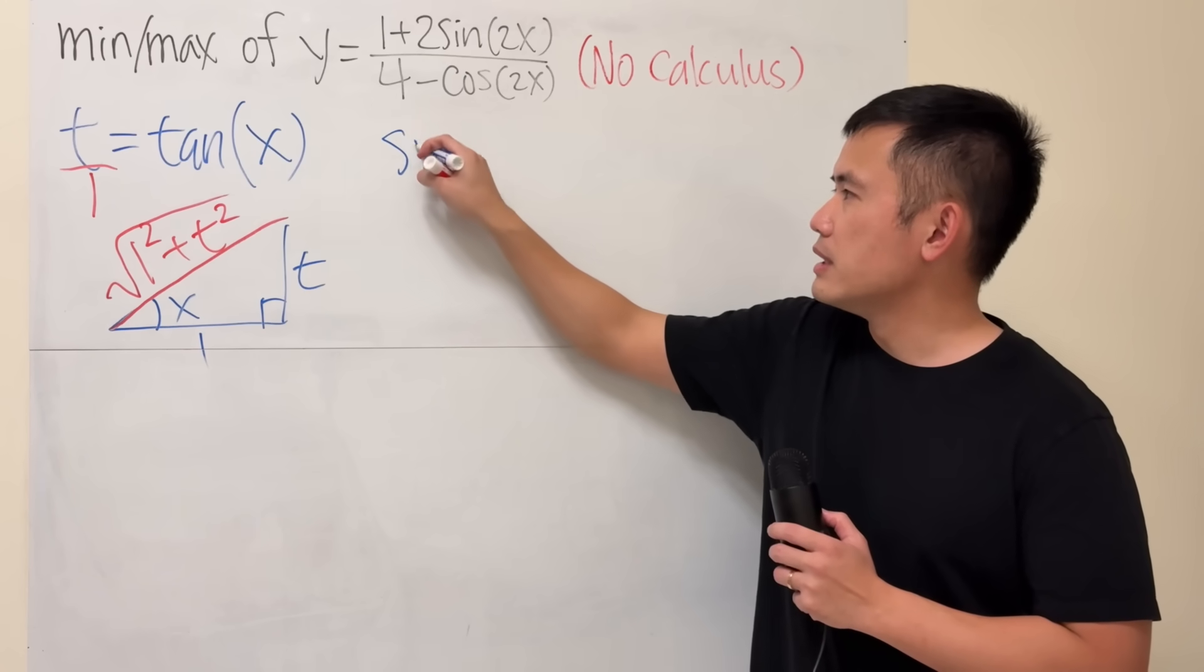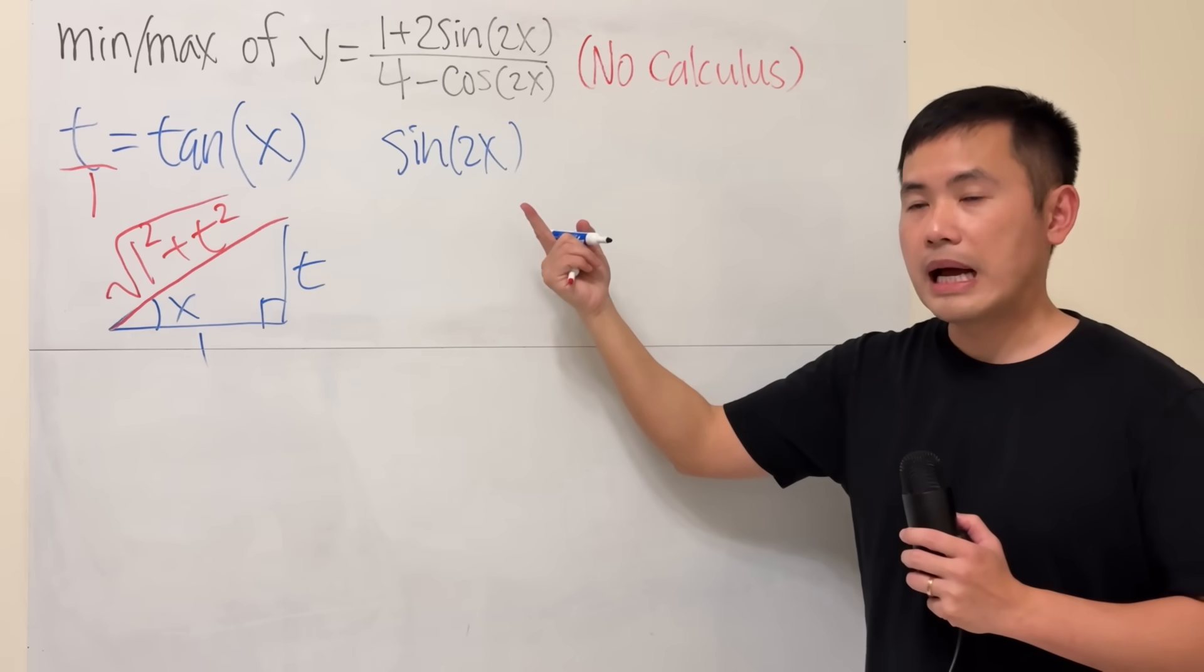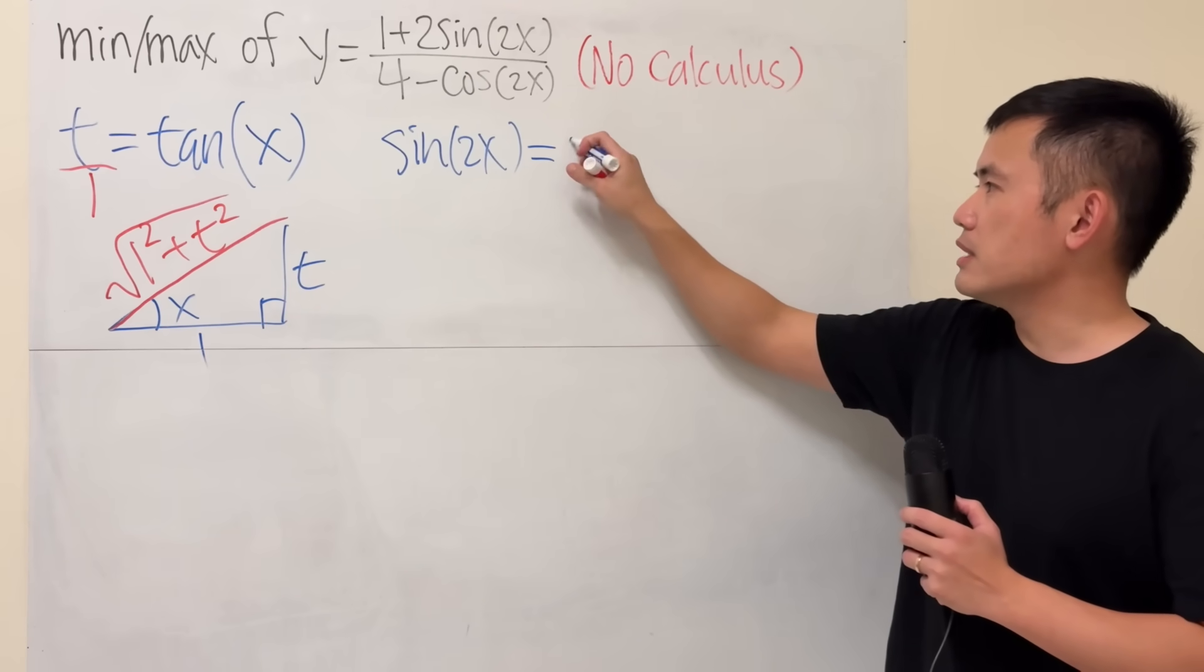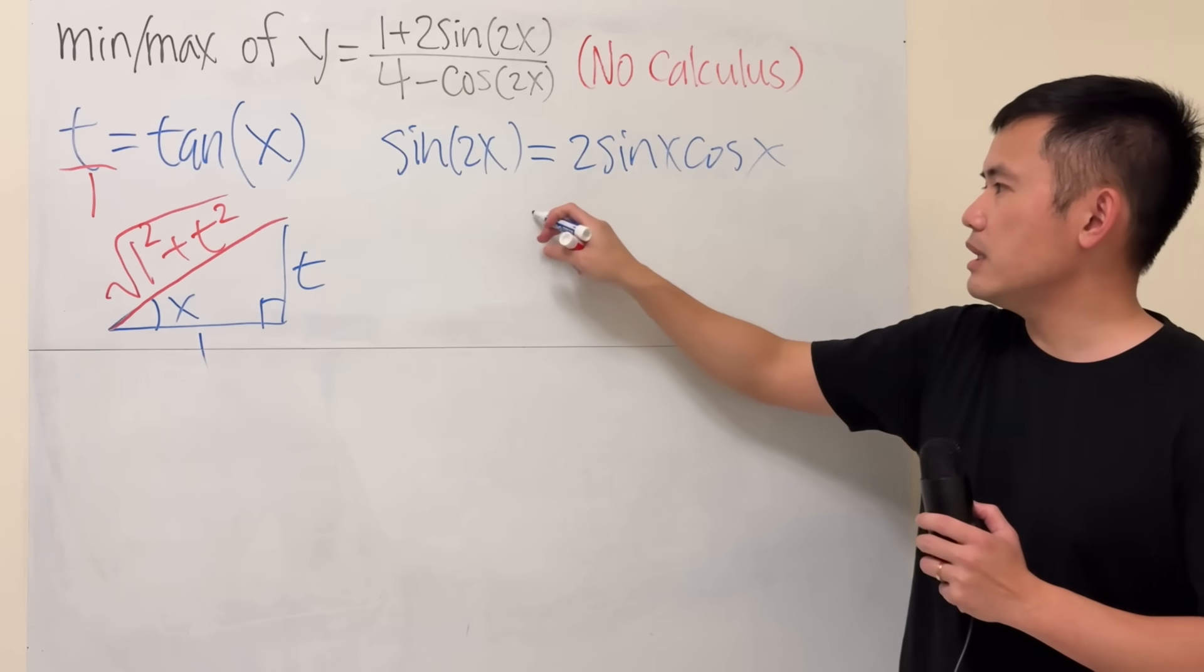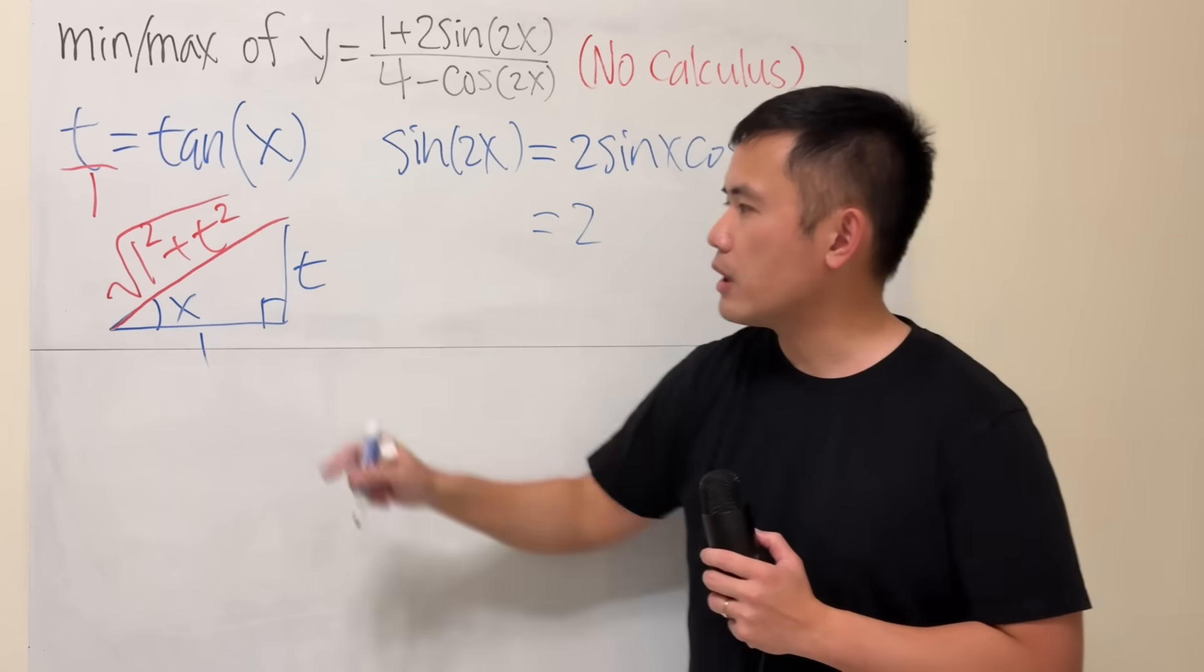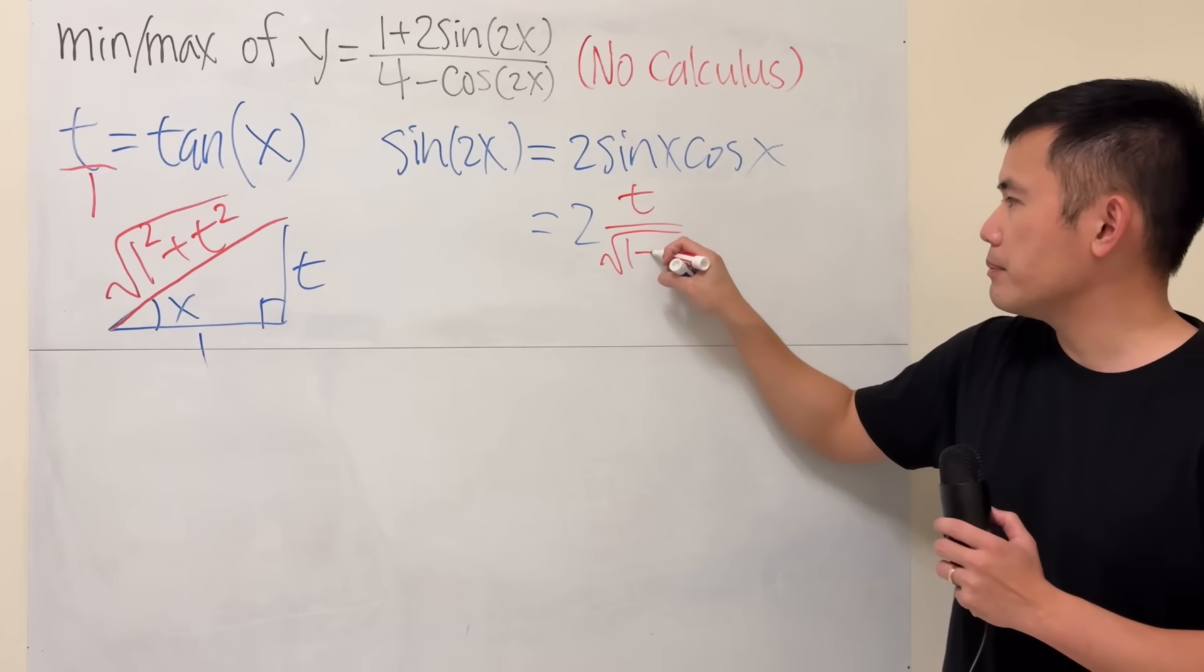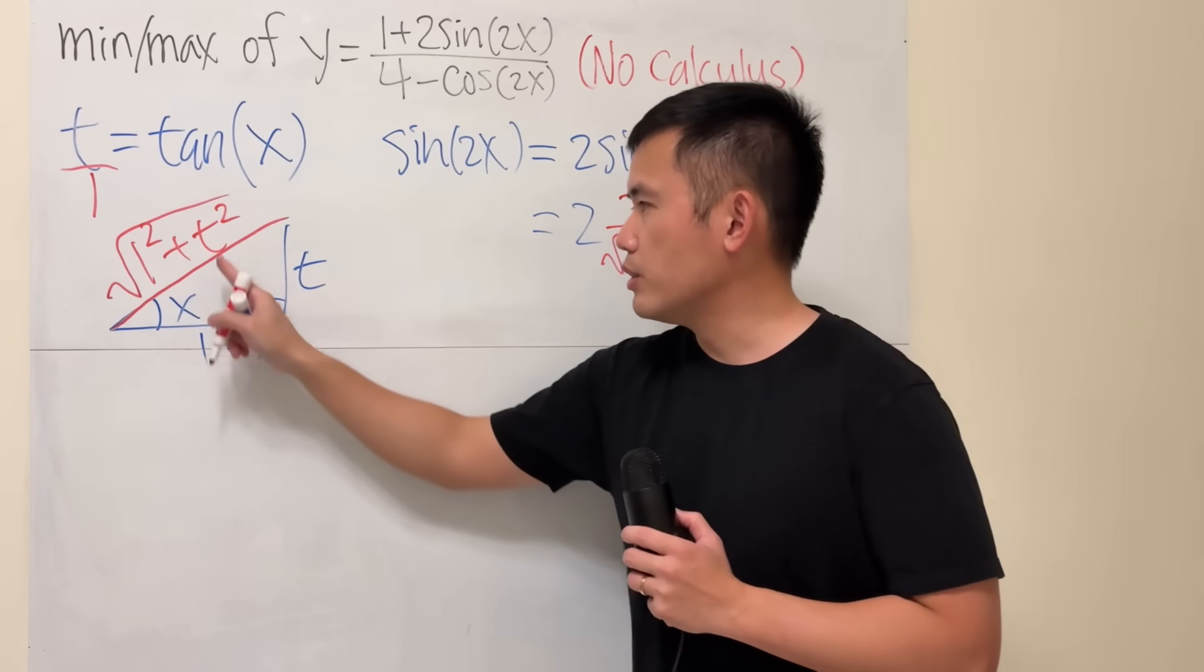Now, we will have to figure out sine of 2x. Well, first we will use the double angle identity because this triangle only has the x. But this right here is the same as 2 sine of x times cosine of x. And then we see the sine of x is just the opposite over hypotenuse. So that's t over square root of 1 plus t squared. And then cosine of x is just adjacent over that.